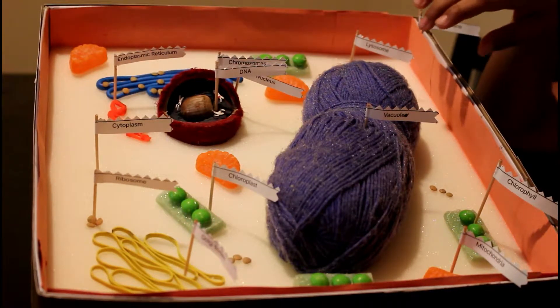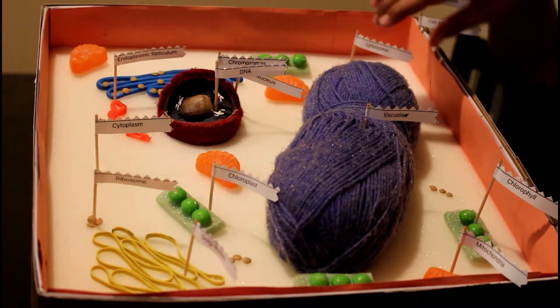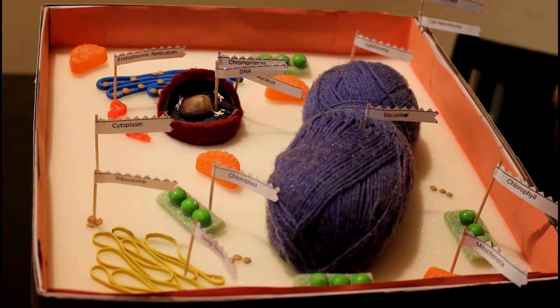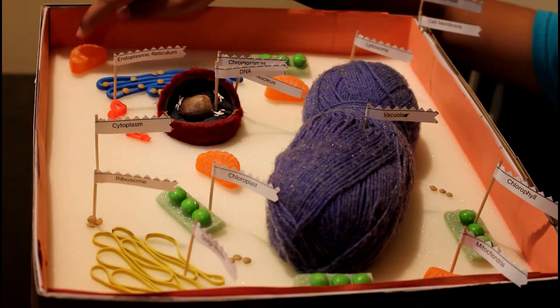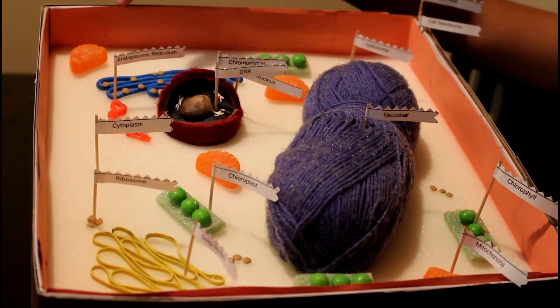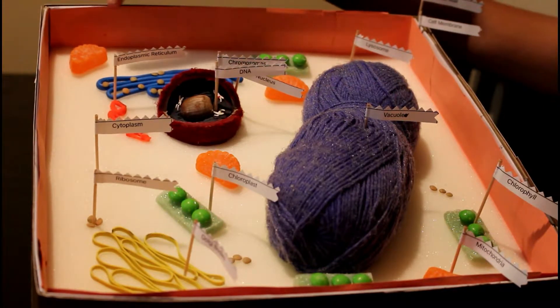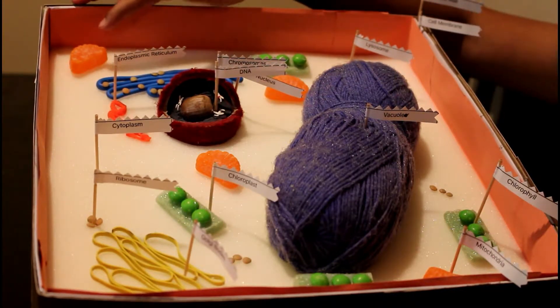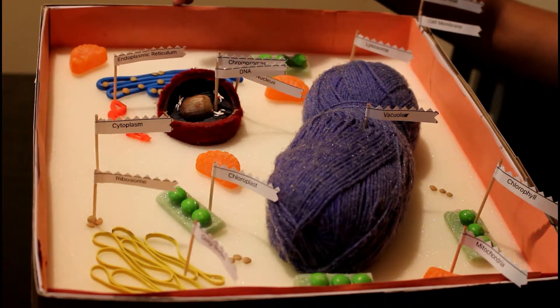These orange candies are mitochondria. They're the powerhouse of the cell and it's bean-shaped with an inner membrane. What it does is it breaks down sugar molecules and turns them into energy.